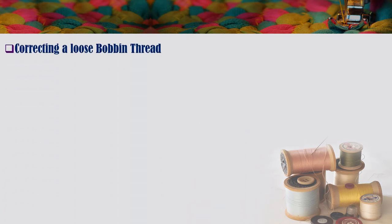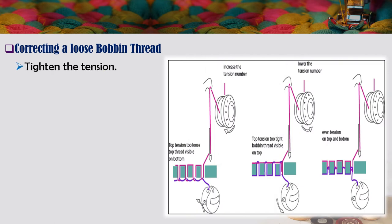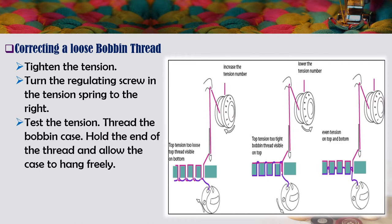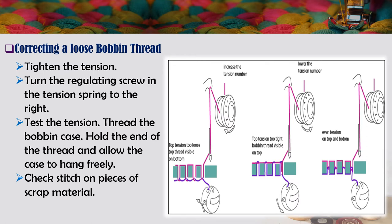How to correct a loose bobbin thread: first, tighten the tension. Second, turn the regulating screw in the tension spring to the right. Then test the tension — thread the bobbin case, hold the end of the thread and allow the case to hang freely. Check the stitch on pieces of scrap material.